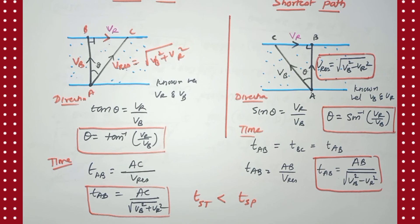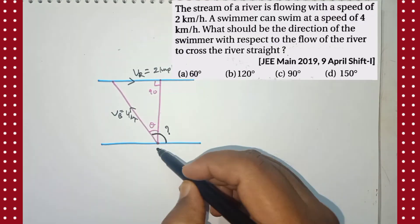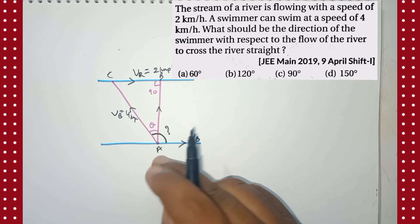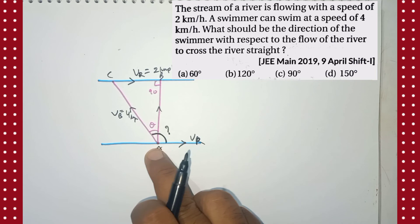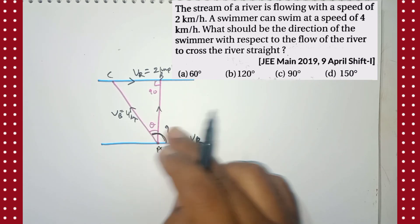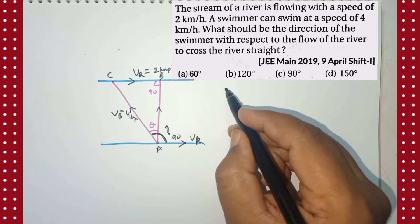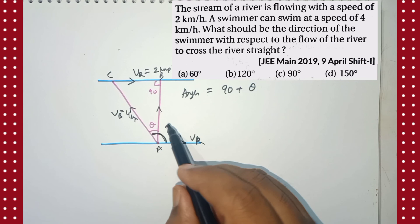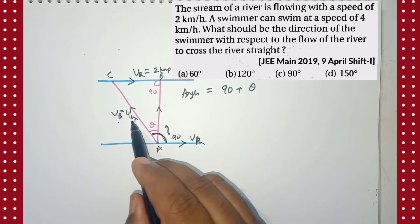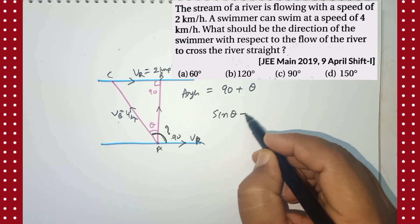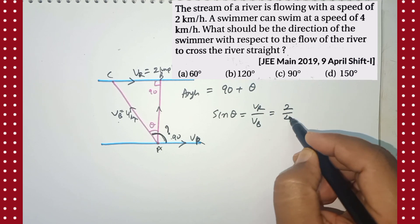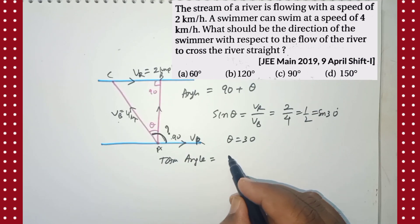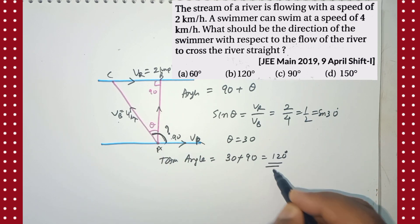Let's solve a problem. A river is moving and the boat has to reach the opposite bank along AB (shortest path). Find the angle made by the boat with the river velocity. The river velocity is 2 km/h and boat velocity is 4 km/h. Sin θ = vr / vb = 2/4 = 1/2, so θ = 30°. The angle between the boat and the river direction is 90° + 30° = 120°.